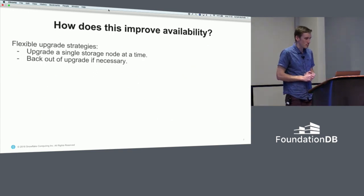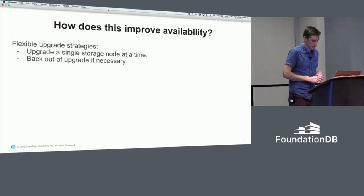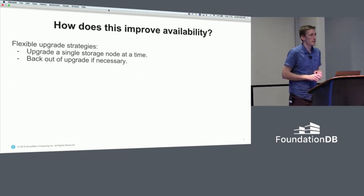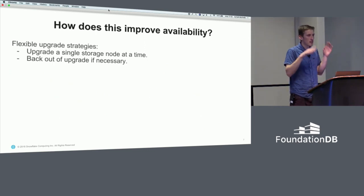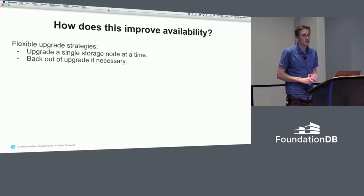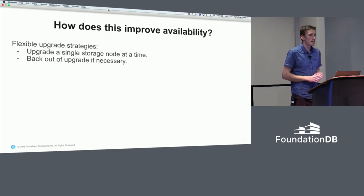How does this improve availability? Basically, you could do something less drastic than stopping the whole cluster and bringing it up to see what happens — you can upgrade just one node at a time. So if there is a CPU regression, you won't cause an unavailability.